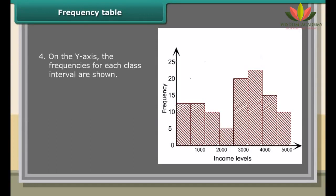In overlapping class intervals, the upper limit of the previous class is the same as the lower limit of the next one. For example, 0 to 20, 40 to 60, etc.